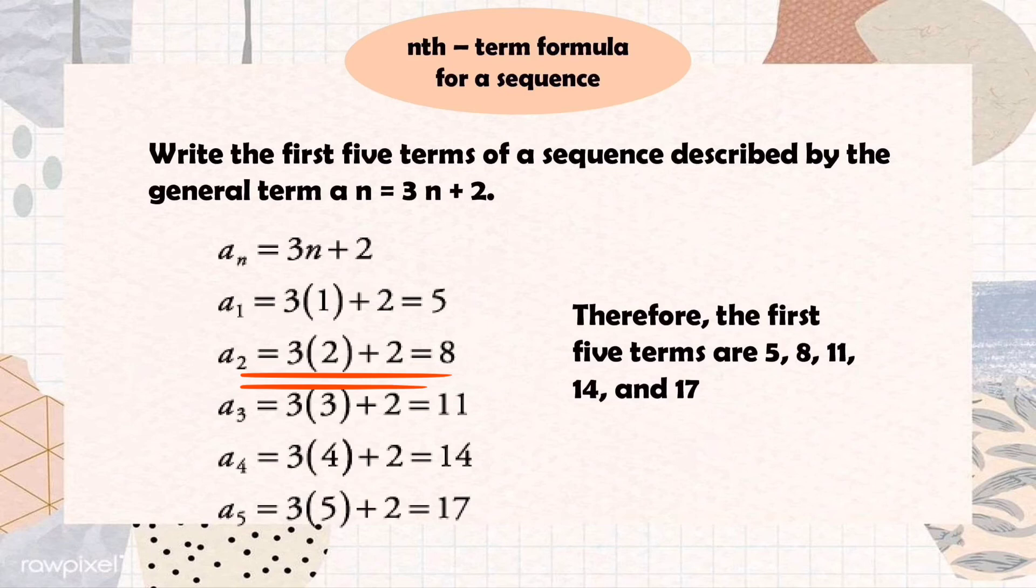Next is a sub 2, so we replace n with 2. That's why 3 times 2 plus 2. So 3 times 2 equals 6 plus 2 equals 8, and that is our second term. Next is a sub 3, and we replace n with 3. So a sub 3 equals 3 times 3 plus 2. So 3 times 4 equals 12 plus 2 equals 14, and that is our fourth term. And the last one, same procedure. A sub 5 equals 3 times 5 plus 2. So 3 times 5 equals 15 plus 2 equals 17, and 17 is our last term.